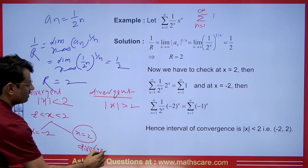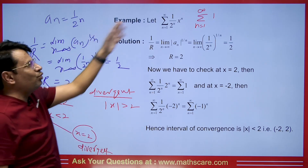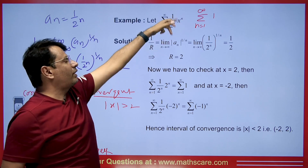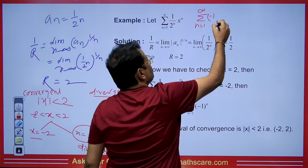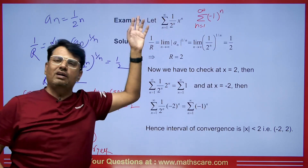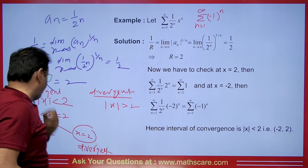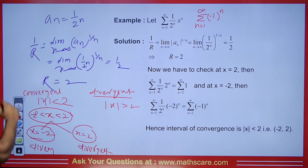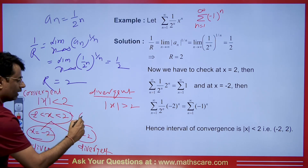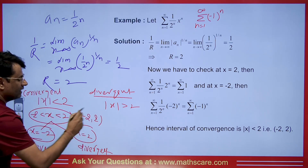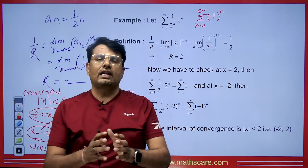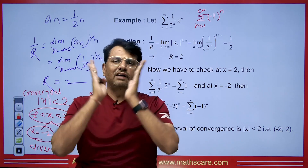We need to pay attention to this. If we put x = −2, it becomes (−2)ⁿ/2ⁿ = (−1)ⁿ. This series is also not convergent. So at both endpoints, the series is divergent. This means convergence holds only on the open interval (−2, 2), and at all remaining points the series is divergent.